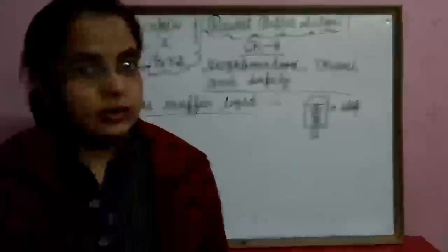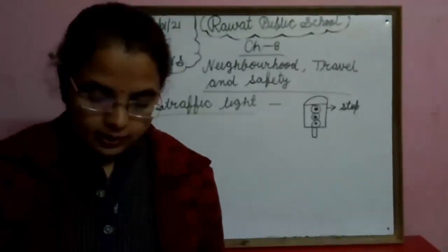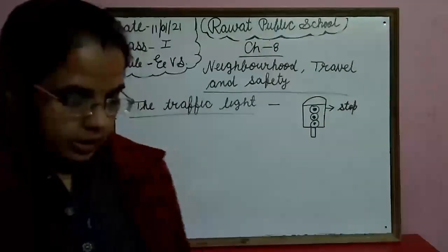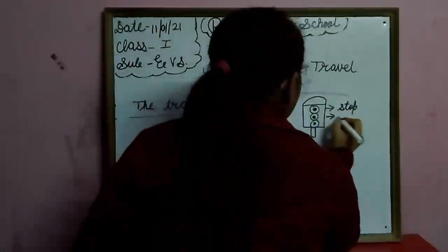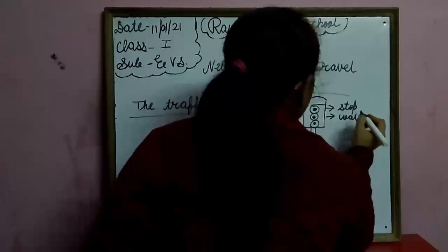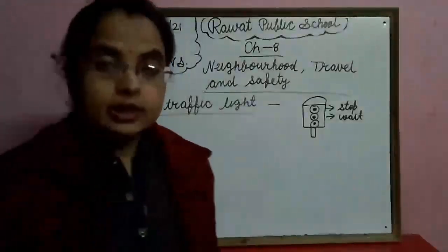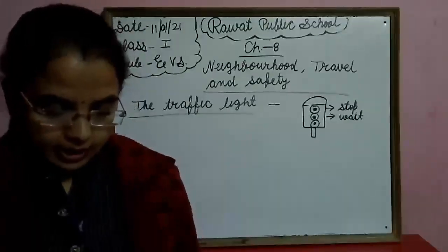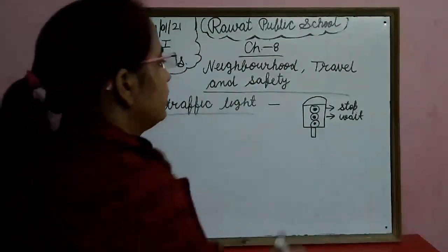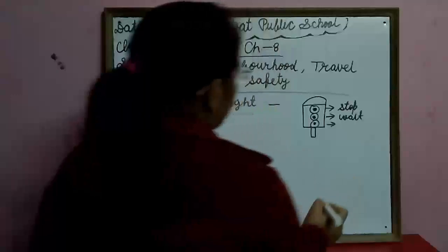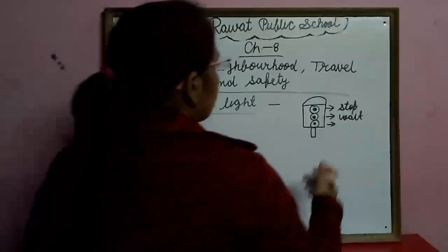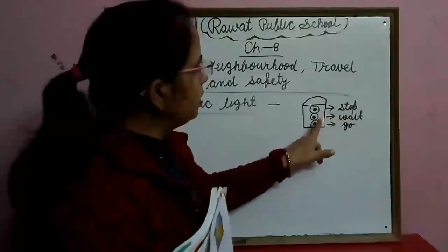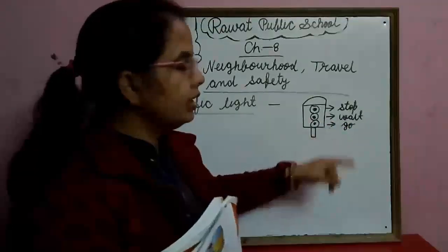Yellow light, yellow light, what do you say? I mean wait until I turn green. Yellow light का mean होता है — Wait. W-A-I-T, wait. Green light, green light, what do you say? I say go, but be careful along the way. Green light का mean होता है — Go. So: Red light — stop. Yellow light — wait. Green light — go.